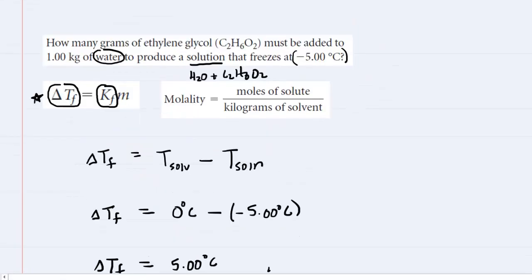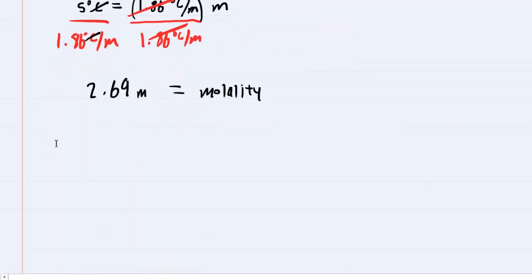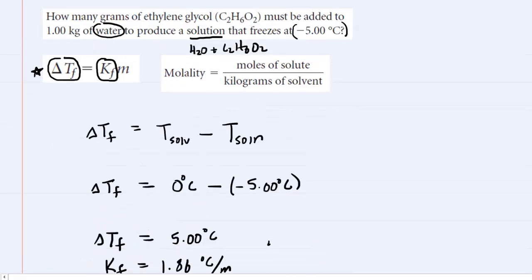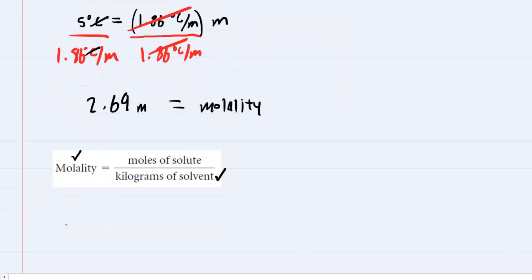Next, we're going to come over here and look at the equation for molality, which we can paste down here. And molality is simply the moles of solute divided by the kilograms of solvent. Now, we know the molality. We just determined that. And the kilograms of solvent were given to us in the question. Remember, it said 1 kilogram of water. So the number of kilograms of our solvent would simply be 1 kilogram. So we'll come down here. We'll plug in the molality of 2.69 little m equals the moles of solute divided by the 1 kilogram of solvent.